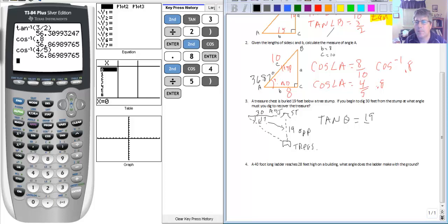It is the opposite over the adjacent. So 19 over 30. That's already reduced.